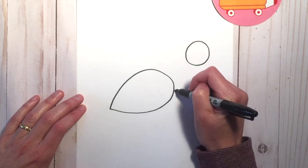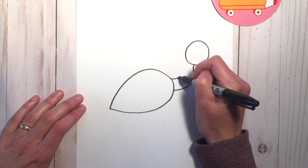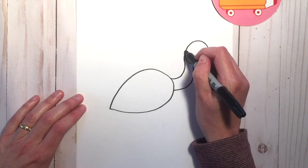Starting here at the teardrop, you're going to make an S-shape up to the circle and repeat that line right above it.